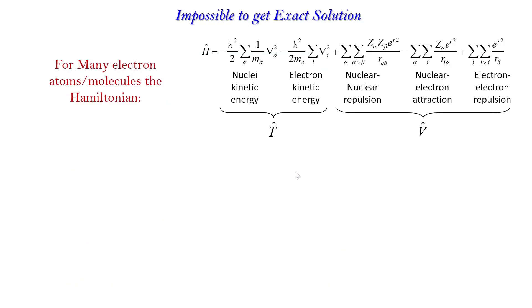For many-electron systems, we can express the Hamiltonian in such a way that it has nuclear kinetic energy, electronic kinetic energy, nuclear-nuclear repulsion, nuclear-electron attraction, electron-electron repulsion, etc. Many terms are there.